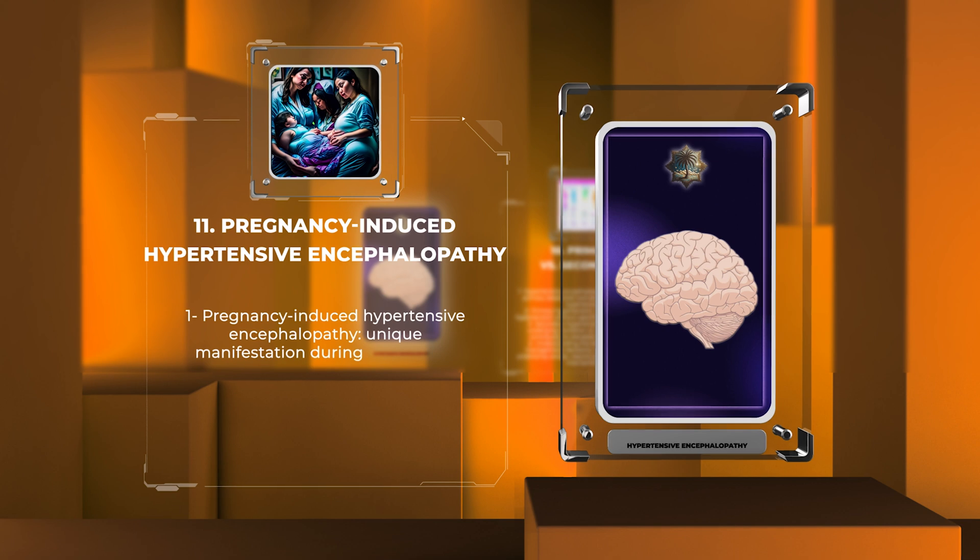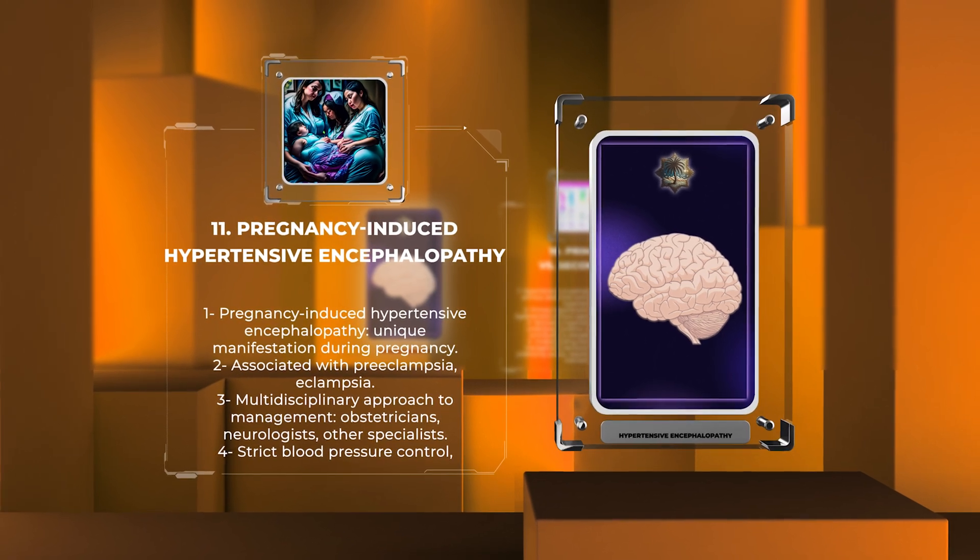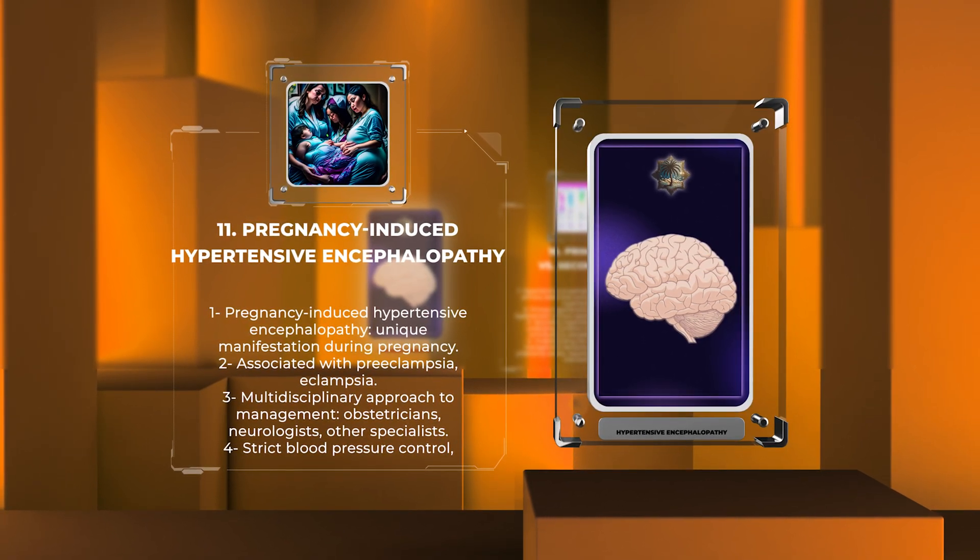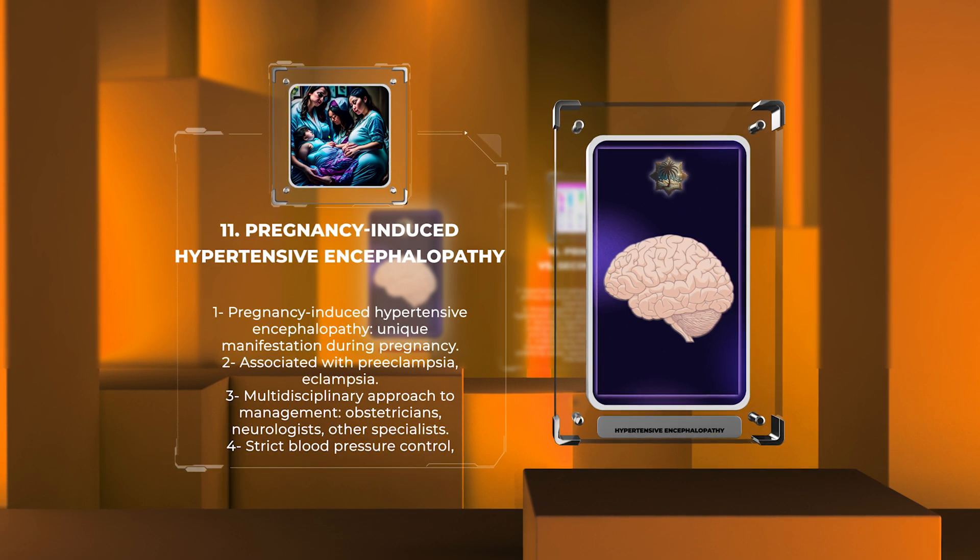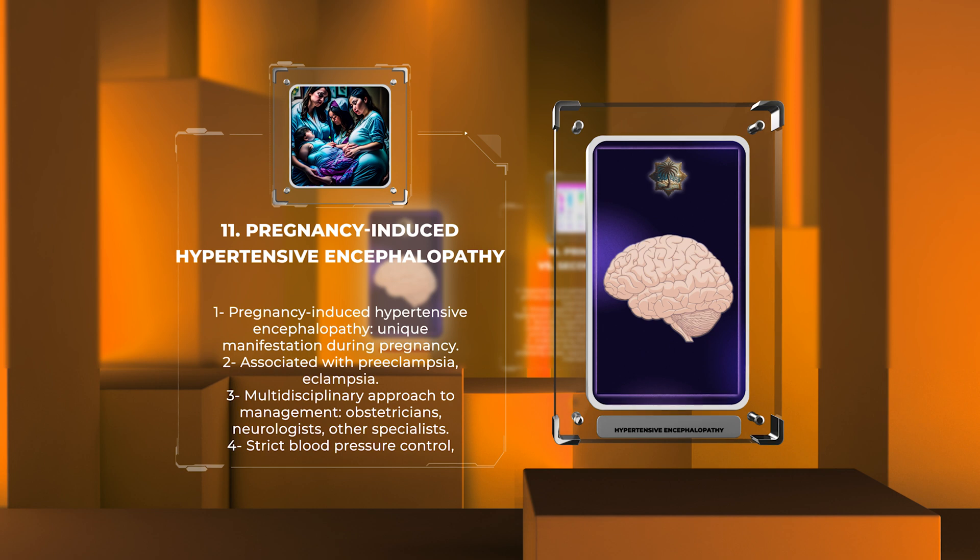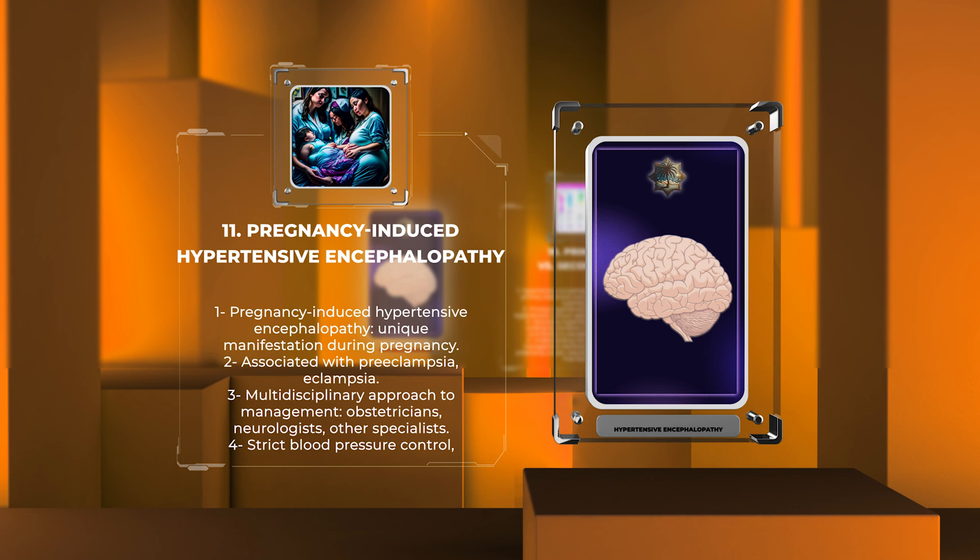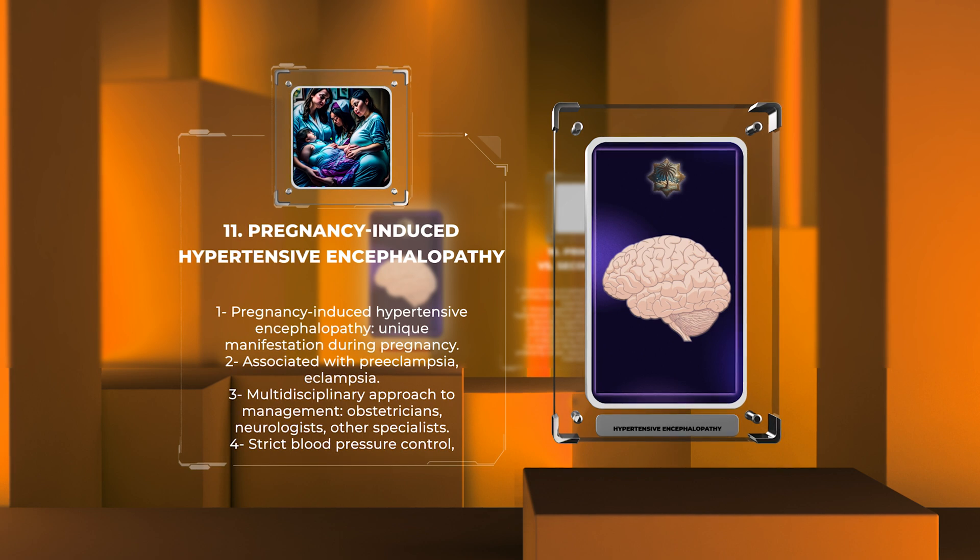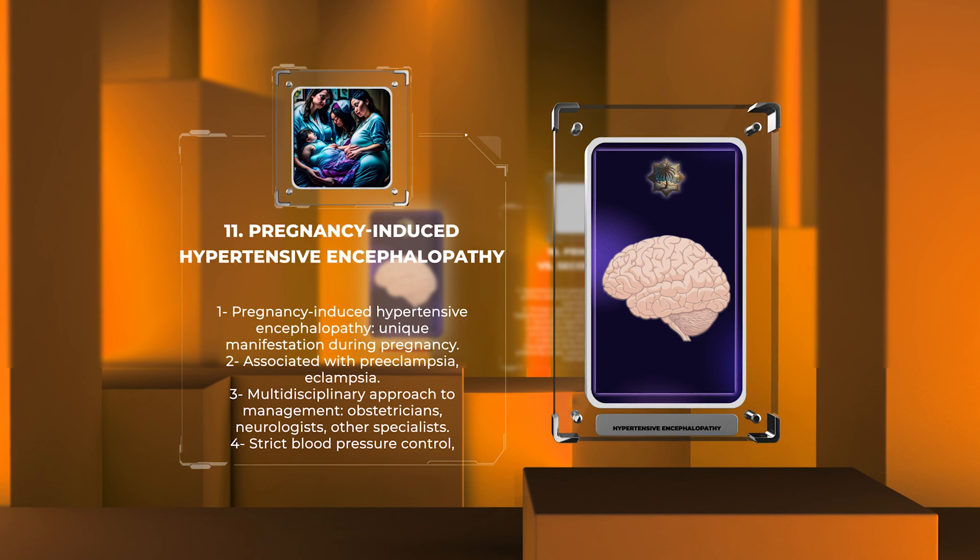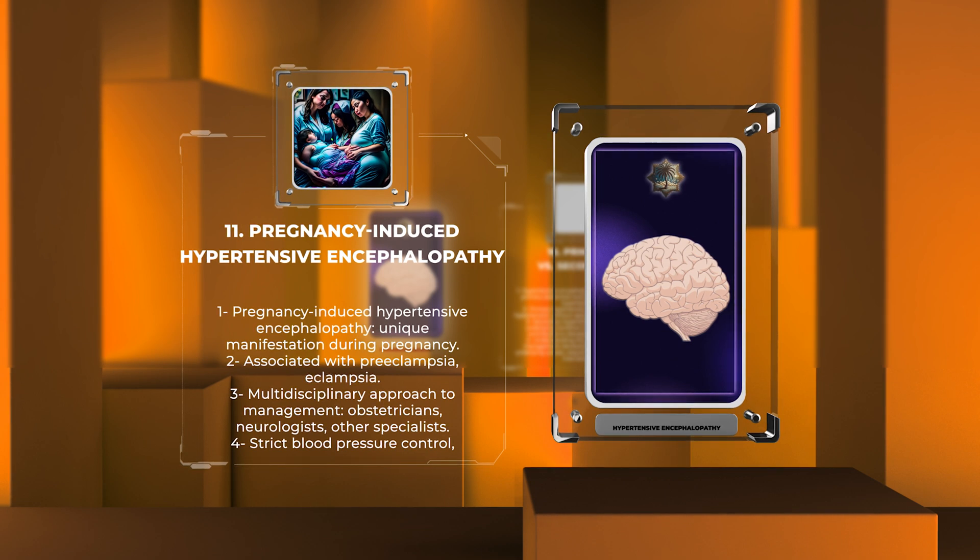Pregnancy-induced hypertensive encephalopathy is a unique manifestation of hypertensive encephalopathy that occurs during pregnancy, typically in association with preeclampsia or eclampsia. These are hypertensive disorders specific to pregnancy that can lead to significant maternal and fetal complications. The management of pregnancy-induced hypertensive encephalopathy involves a multidisciplinary approach, including obstetricians, neurologists, and other involved specialists. Strict blood pressure control, monitoring of fetal well-being, and timely delivery are crucial components of management to optimize maternal and fetal outcomes.